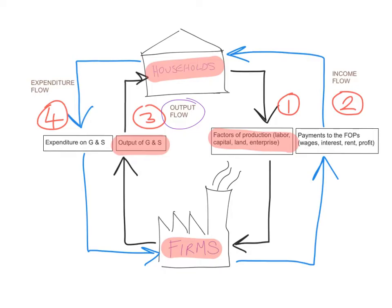There is also the flow of money. When the firms receive the factors of production from the households, they in turn pay them the factor payments. Labour gets wages, capital gets interest, land gets rent, and enterprise gets profit. This is the income flow — the payments to the factors of production from the firms to the households. The households then take this income and spend it on goods and services, which gives us the expenditure flow.